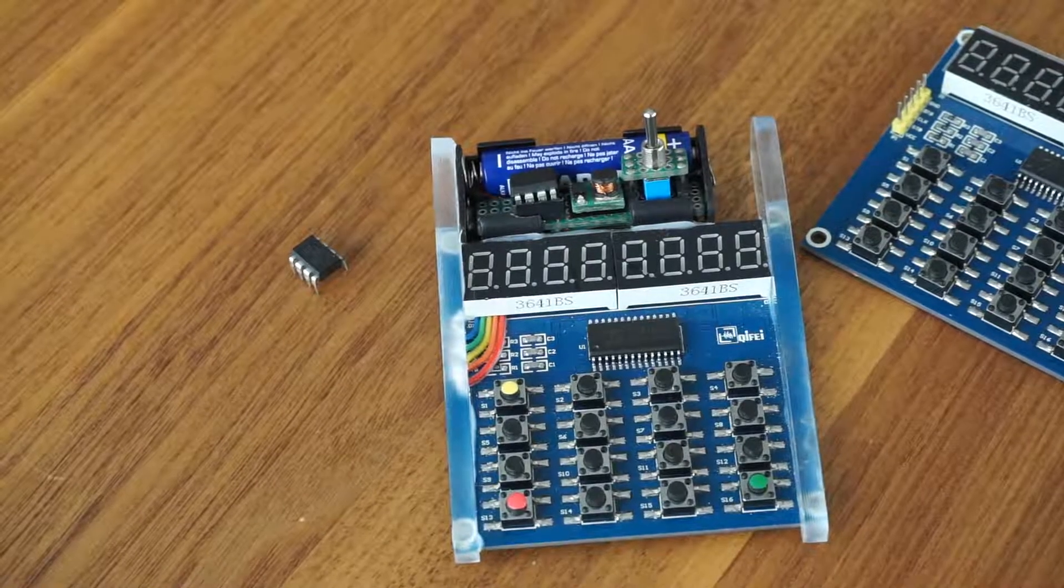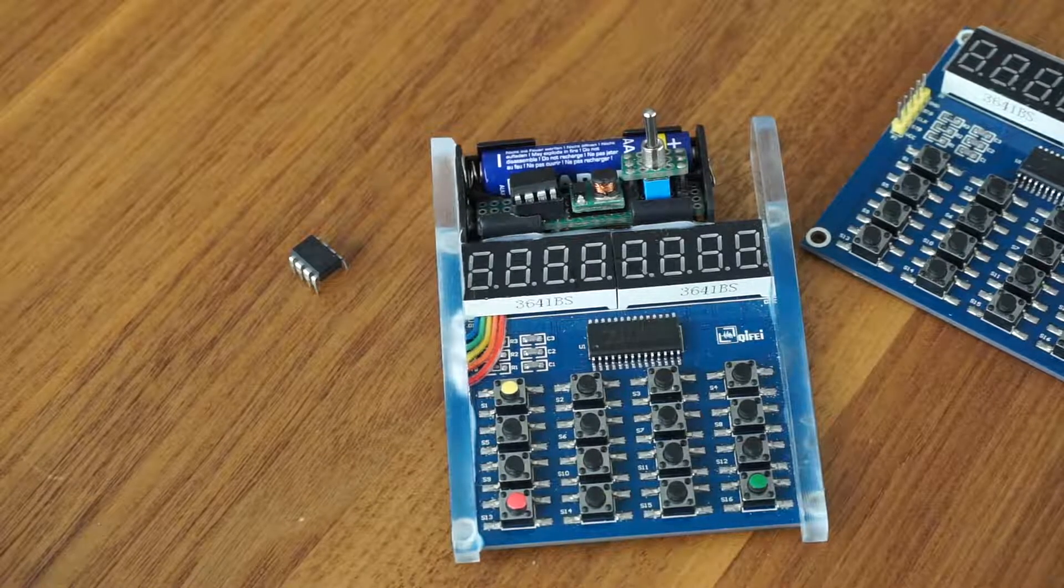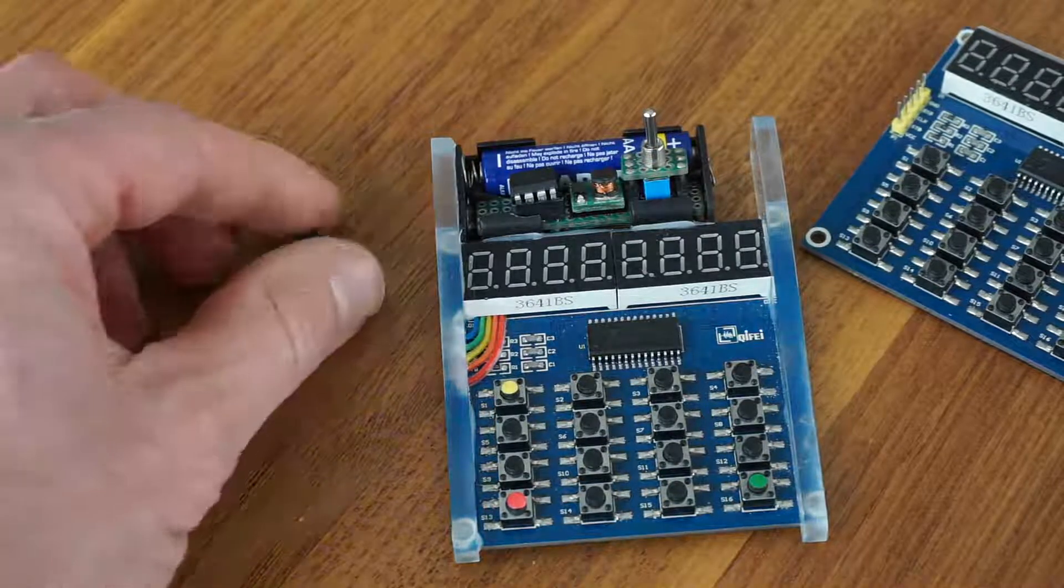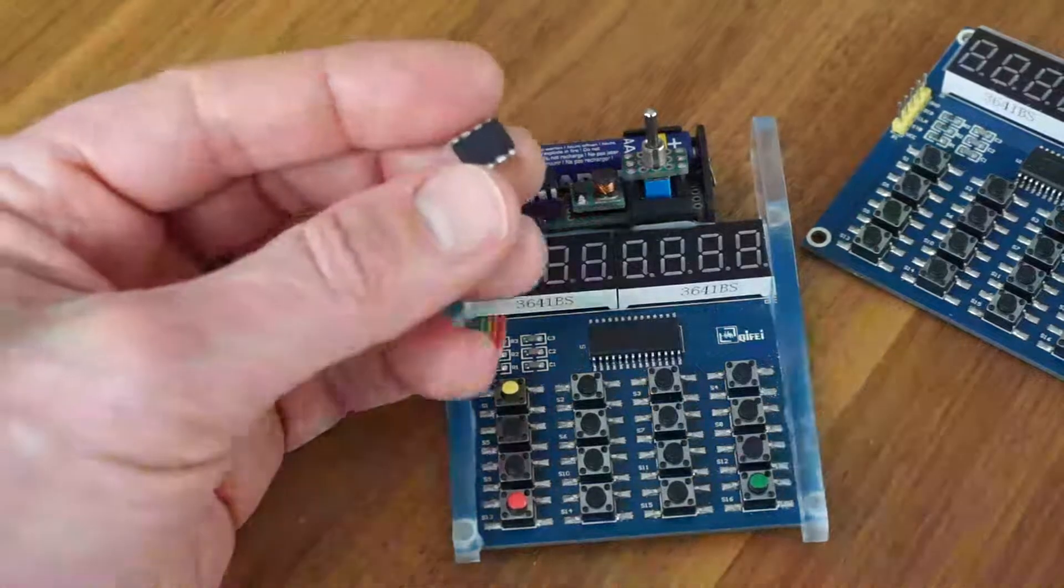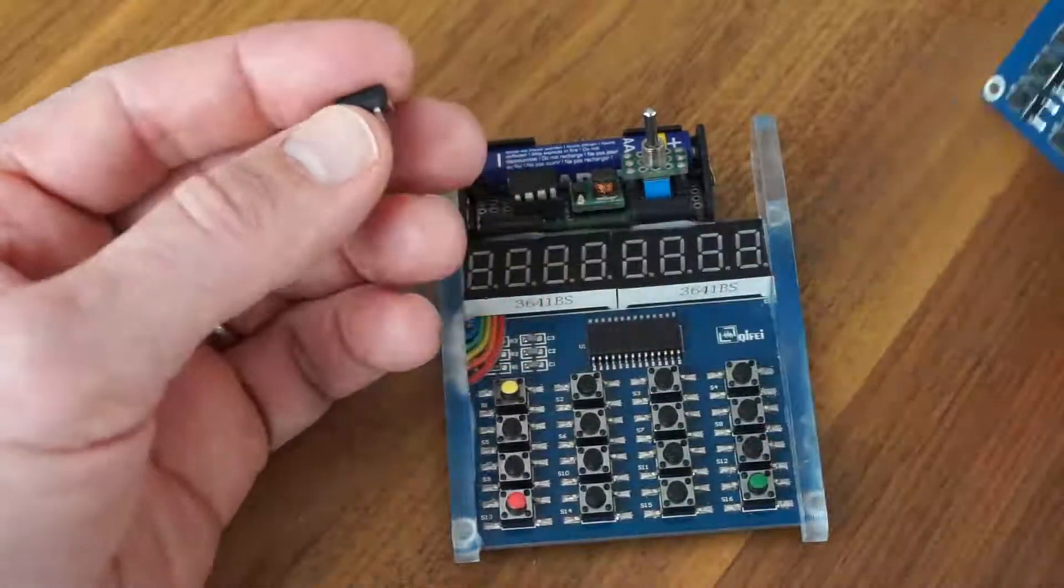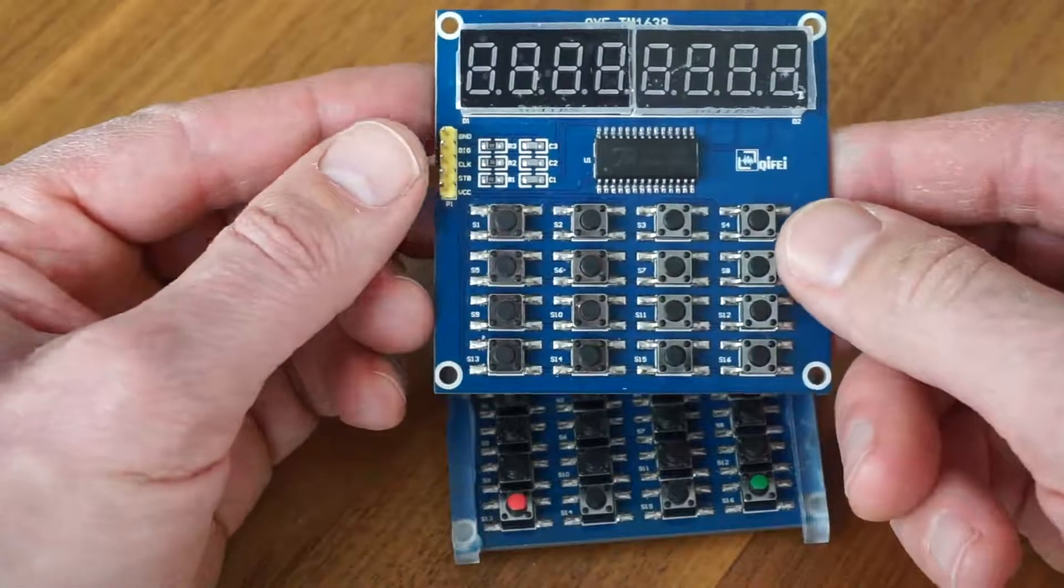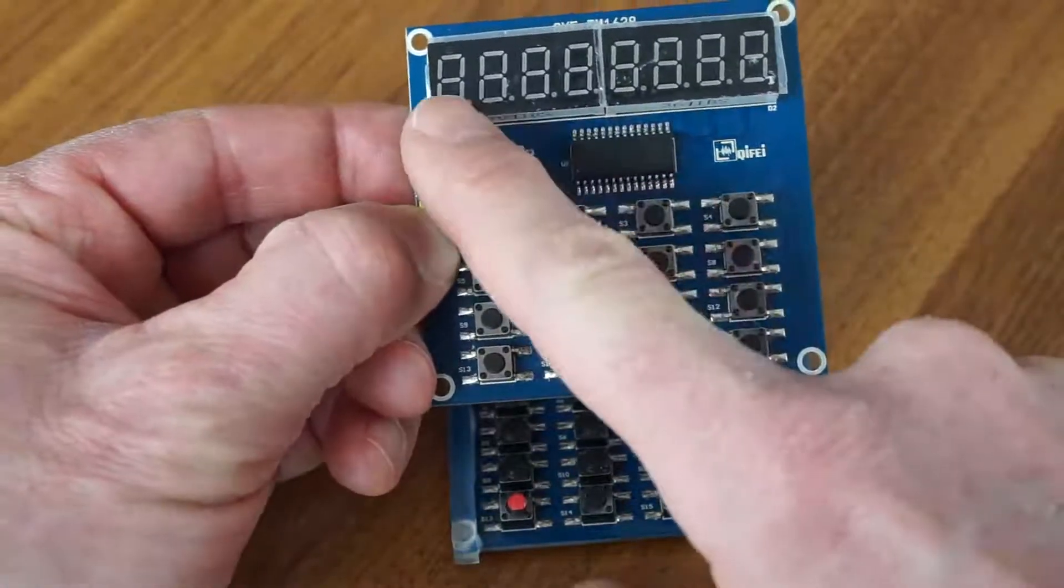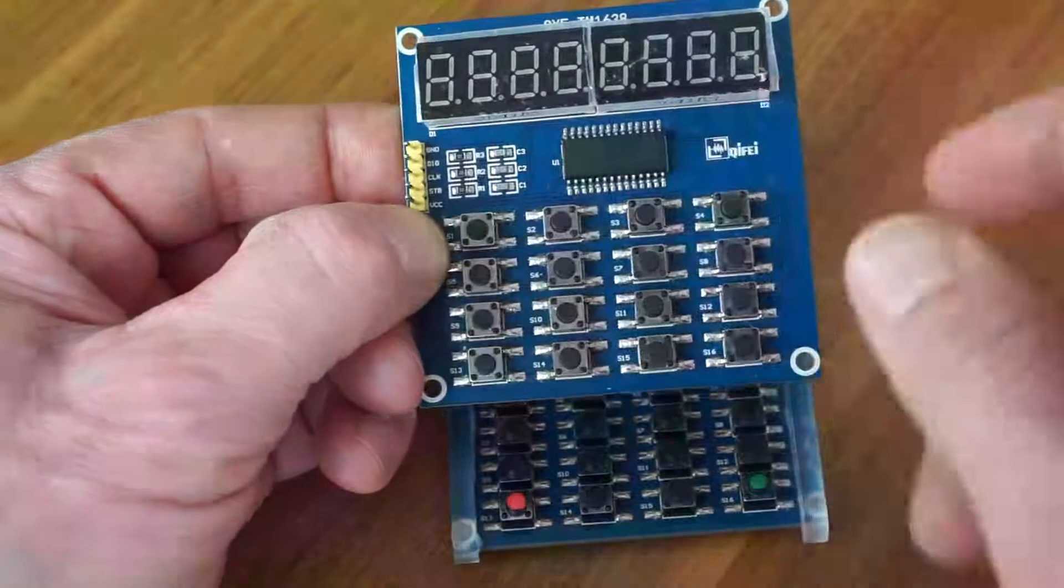Hello everybody. Today I would like to introduce SCERI, my scientific RPN calculator which is based on this ATtiny 85 chip and this development board which consists of 16 keys and 8 LED digits.